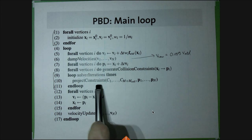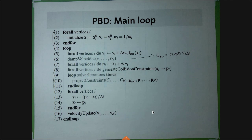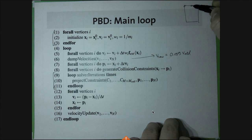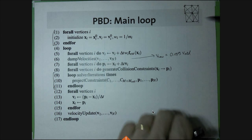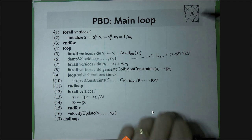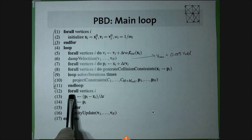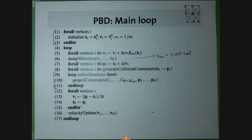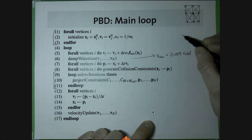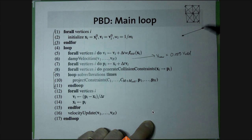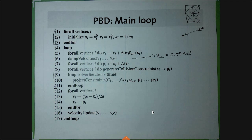You do several sweeps of projecting all of the constraints. The P's are updated — as you go through each constraint, the proposed particle positions get updated in such a way that the constraints are better satisfied. After projecting all constraints, the P's become the next-frame particle positions. Then we update velocities to agree, since X_i was the previous position and P_i is the new position. The last step handles things like friction.